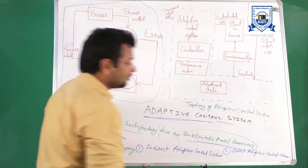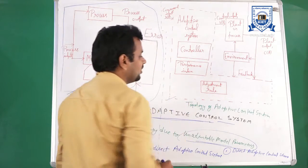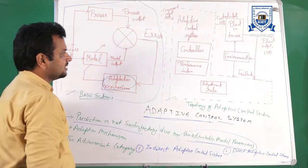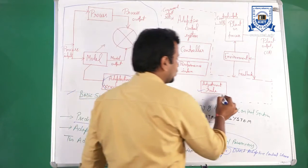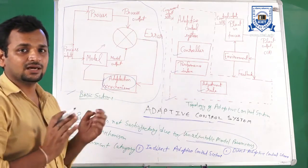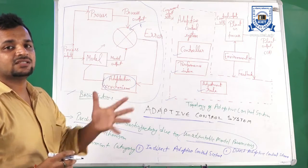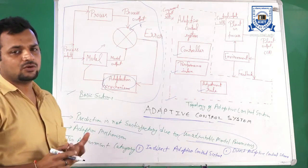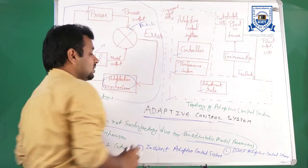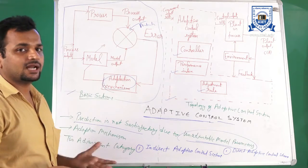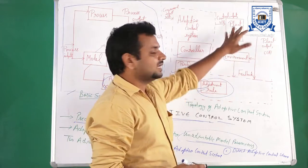This is the basic scheme and topology of the adaptive control system. The adoption mechanism includes the controller performance index and the adjustment rule. If there are certain perturbations or disturbances in the process, we need to use a certain type of adoption mechanism. If disturbances are zero, we can use the predictive control strategy, but if disturbances are present, we need to design adjustment rules according to environmental conditions and process parameters.